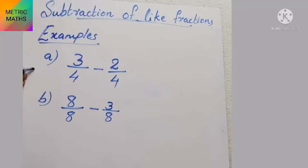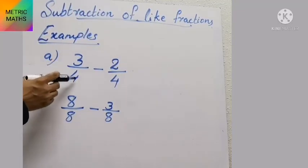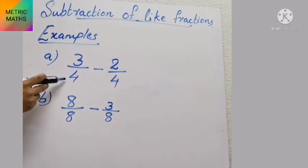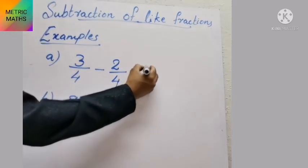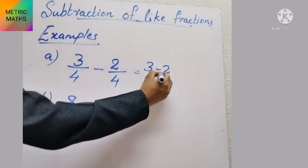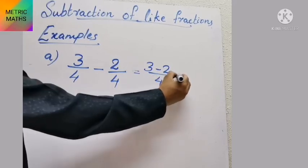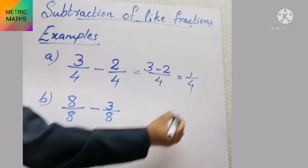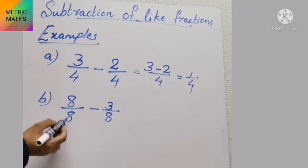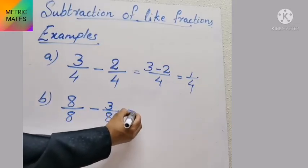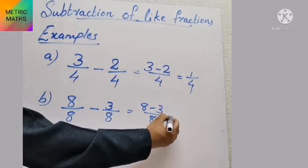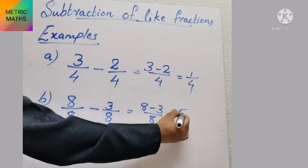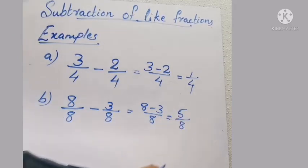Look at these subtraction examples. First, 3 by 4 minus 2 by 4 — the denominators are the same, so just subtract the numerators: 3 minus 2 by 4, which equals 1 by 4. Next, 8 by 8 minus 3 by 8 equals 8 minus 3 by 8, which equals 5 by 8. So the answer is 5 by 8.